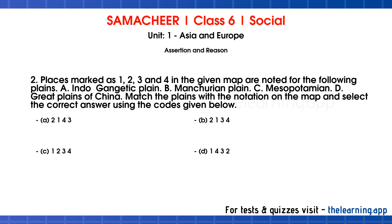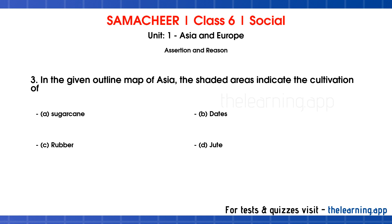Question 2: Places marked as 1, 2, 3 and 4 in the given map are noted for the following plains: A. Indo-Gangetic Plain, B. Manchurian Plain, C. Mesopotamian Plain, D. Great Plains of China. Match the plains with the notation on the map and select the correct answer using the codes given below. Question 3: In the given outline map of Asia, the shaded areas indicate the cultivation of — Options are: A. Sugarcane, B. Dates, C. Rubber, D. Jute. Correct answer is B, Dates.